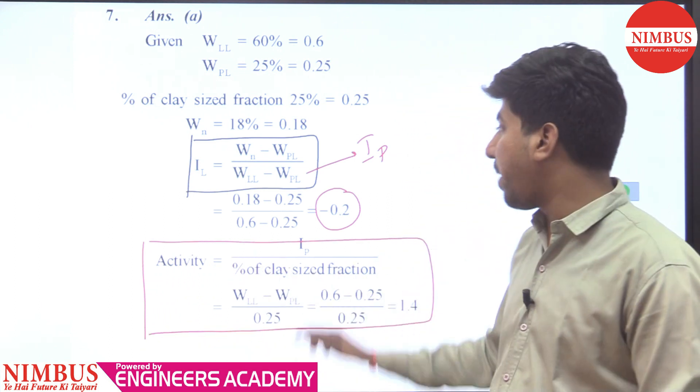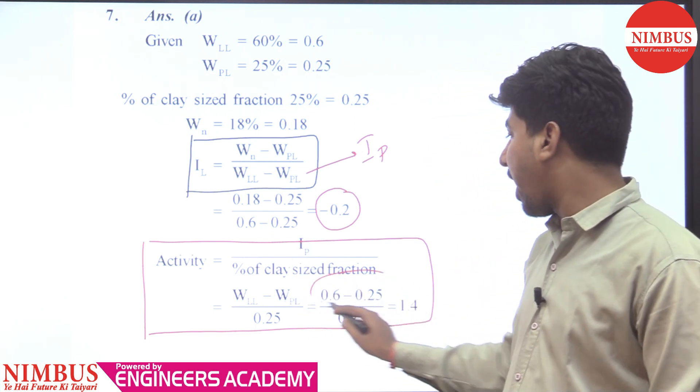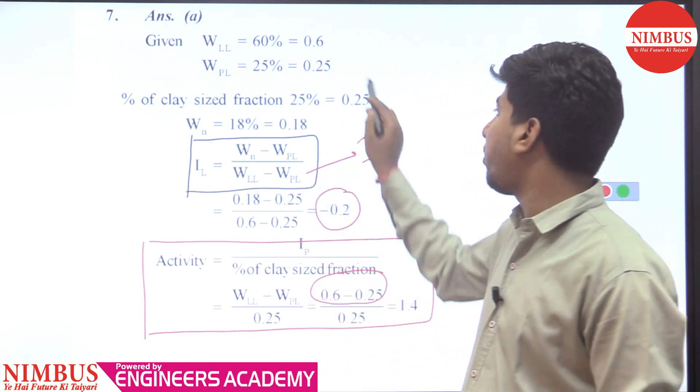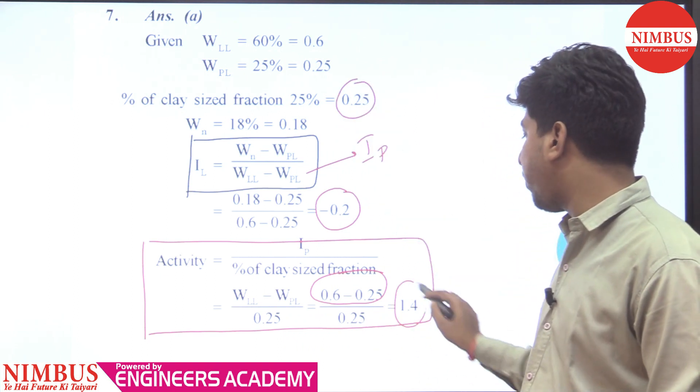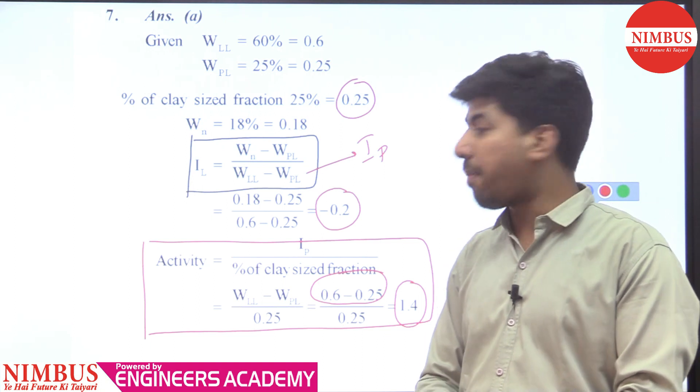Now activity: this became 60 minus 25, IP, and clay percent is 0.25, so 1.4. So activity is 1.4 and your liquidity index is minus 0.2.